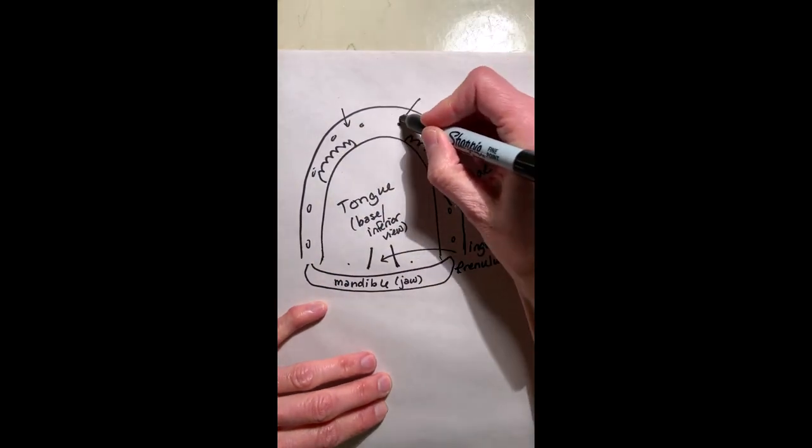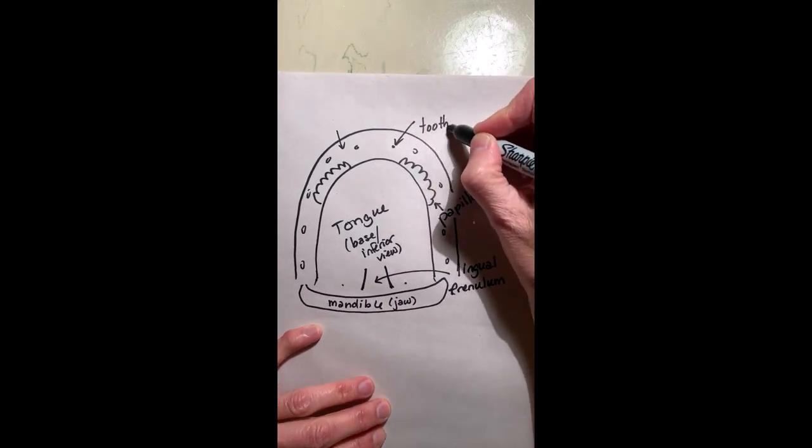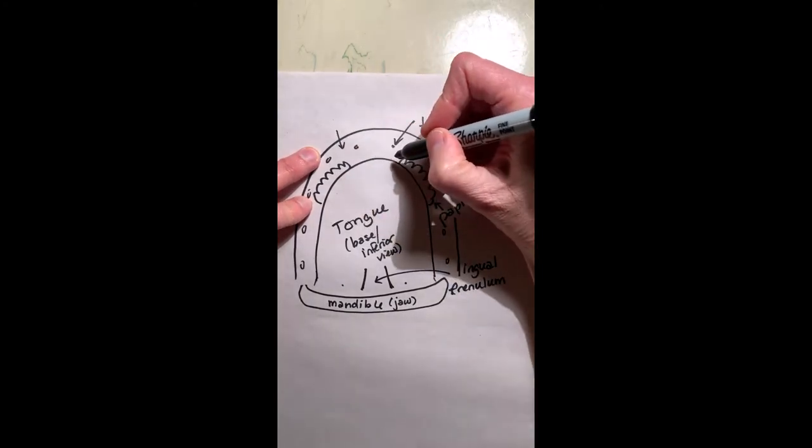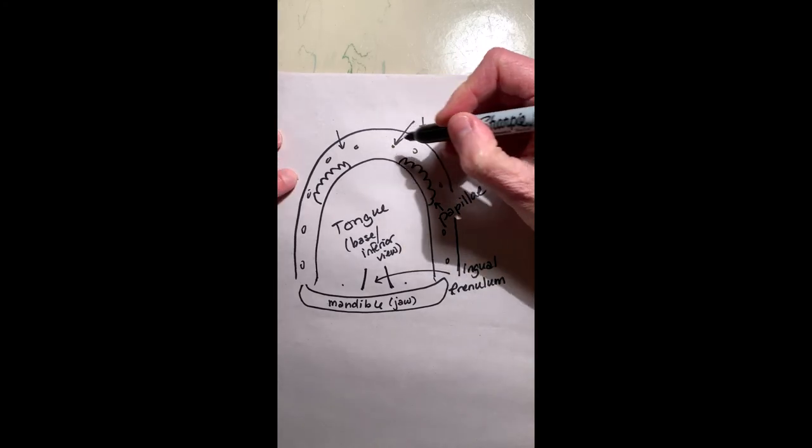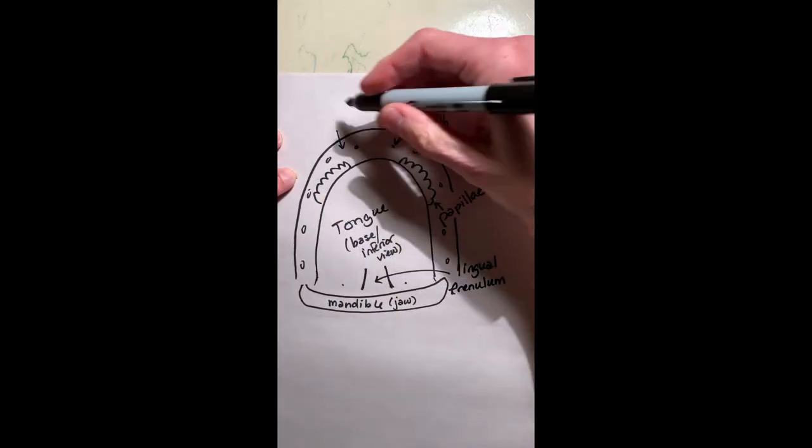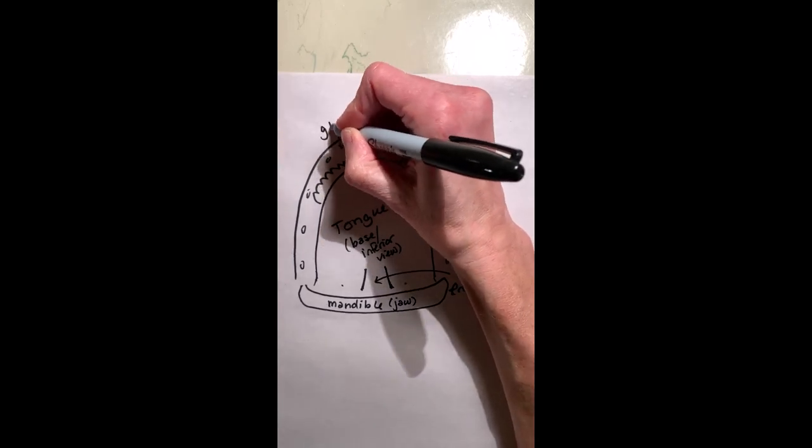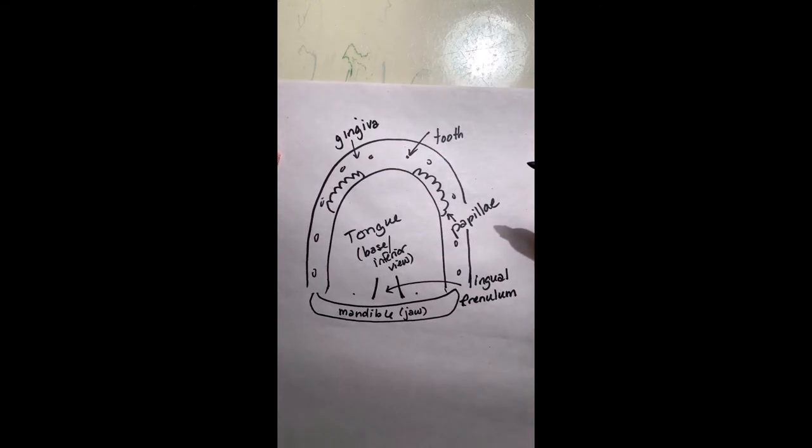The teeth are embedded in bone, of course, and the tissue that's covering this, this would be the maxillary. The tissue that's covering these alveolar processes is the gingiva. You might know it better as the gums, but we're going to call it gingiva from now on.